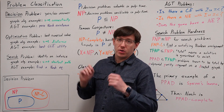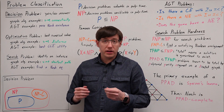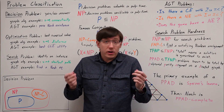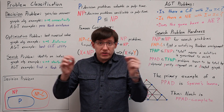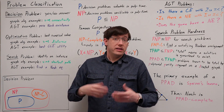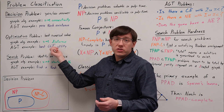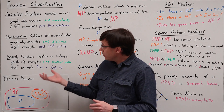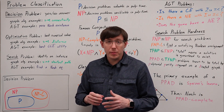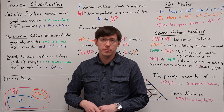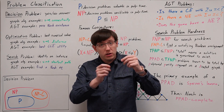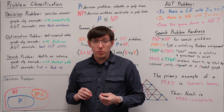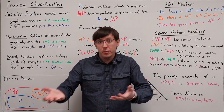Next we have optimization problems, where the answer we're trying to find is some maximal or minimal numerical value. In a graph we might want to look for the shortest distance between two nodes, and in game theory we might look for the best utility that can be achieved by a certain type of equilibrium. Finally we have search problems where we're trying to find a particular object or instance — for example, constructing the shortest path between two vertices, or identifying a Nash equilibrium in a game.